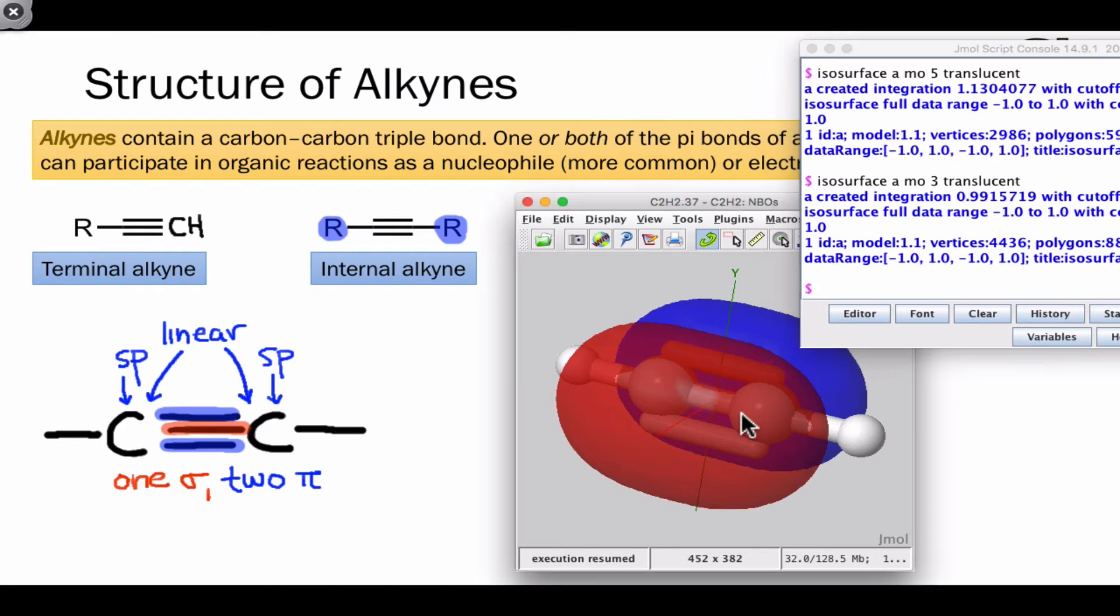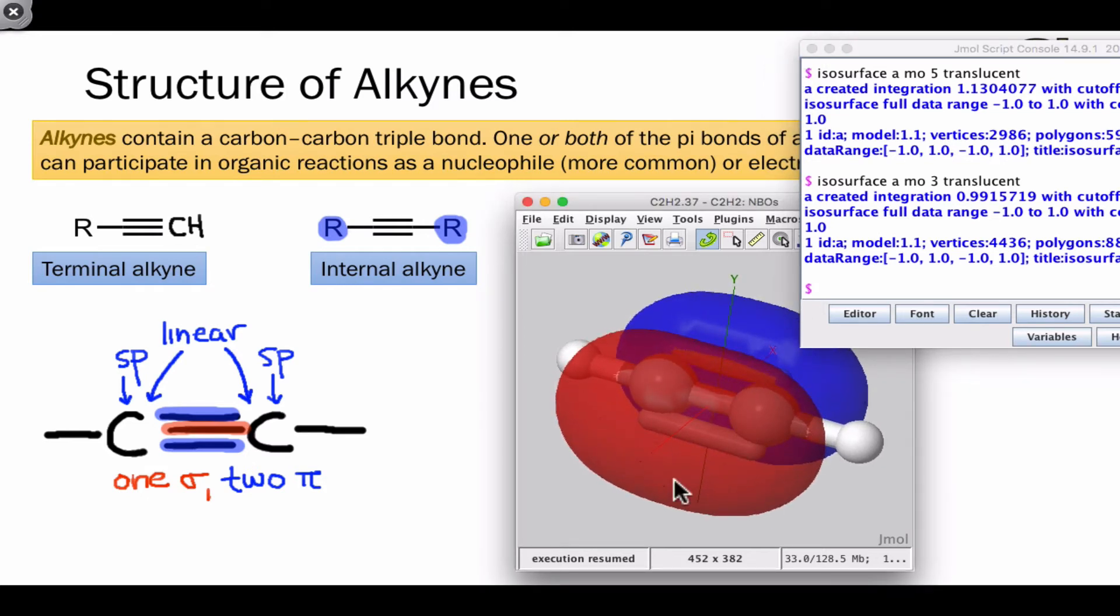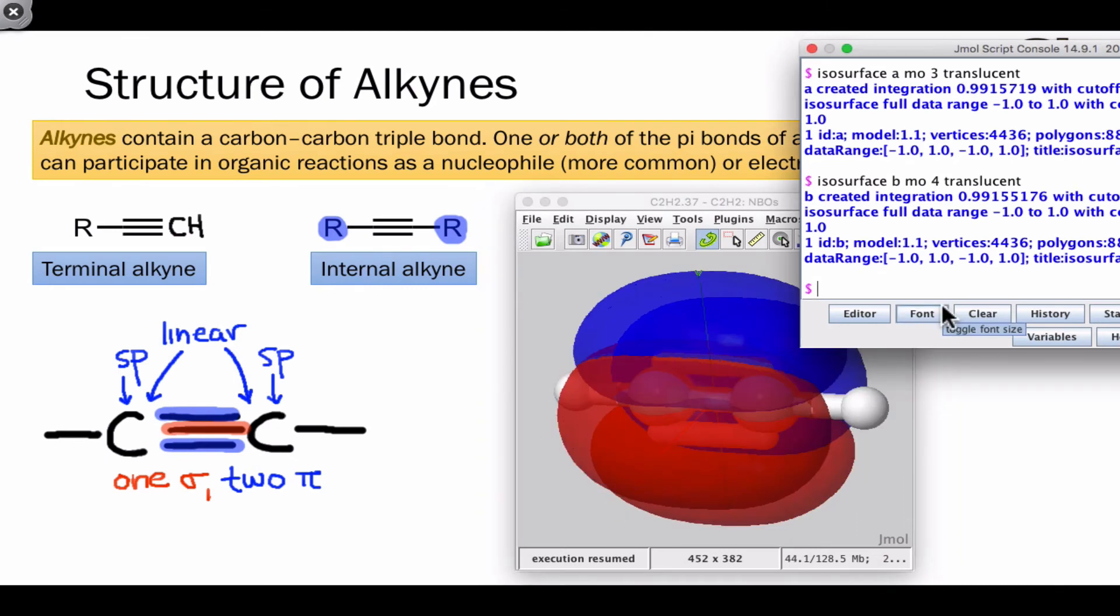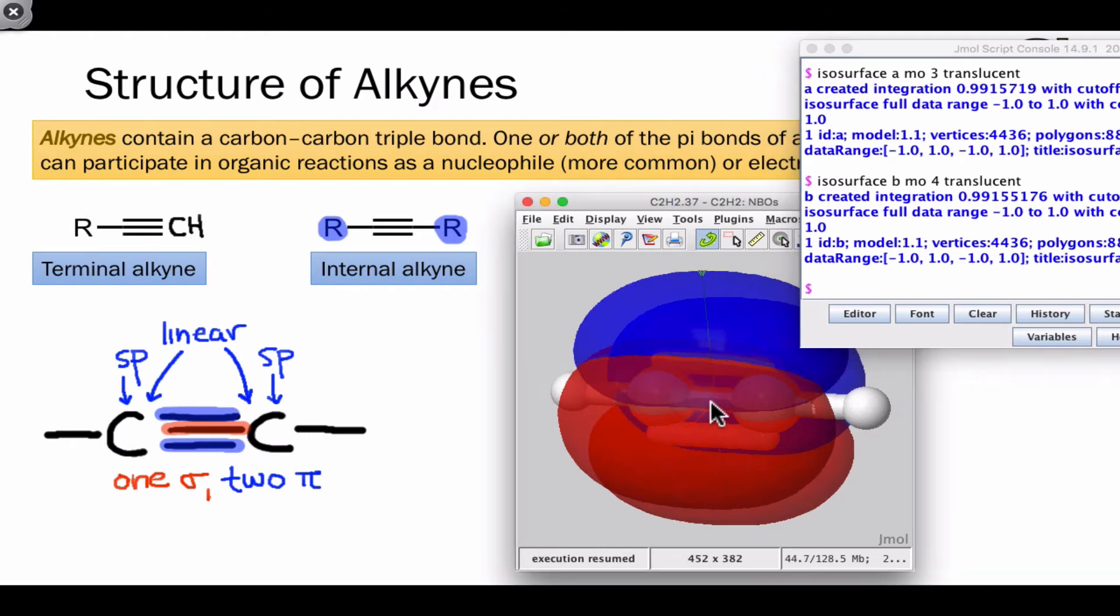The second pi orbital of the alkyne is perpendicular to the first, and we can see that here. The p orbitals that compose this pi orbital are aligned along the x-axis. If we overlay both orbitals on the structure, we can then see that approach of an electrophile can occur along either axis, the x or the y-axis, due to the fact that the two pi orbitals in this molecule are perpendicular to each other.